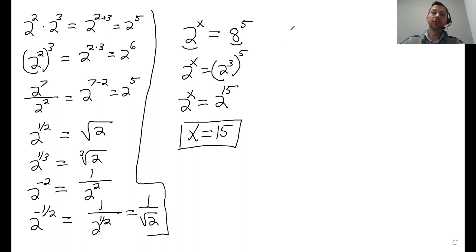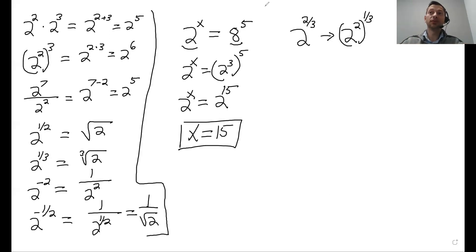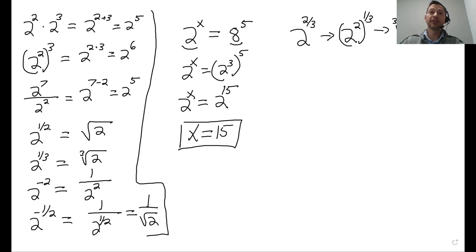What else can they give you? You might see something like 2 to the 2 thirds. What is that? Well, that's really the same as 2 to the 2 to the 1 third — we can separate it. So 2 to the 2 to the 1 third: we know to the 1 third is cube root, so that's the cube root of 2 squared. Now that you understand these rules, let's demonstrate using actual previously administered exams.